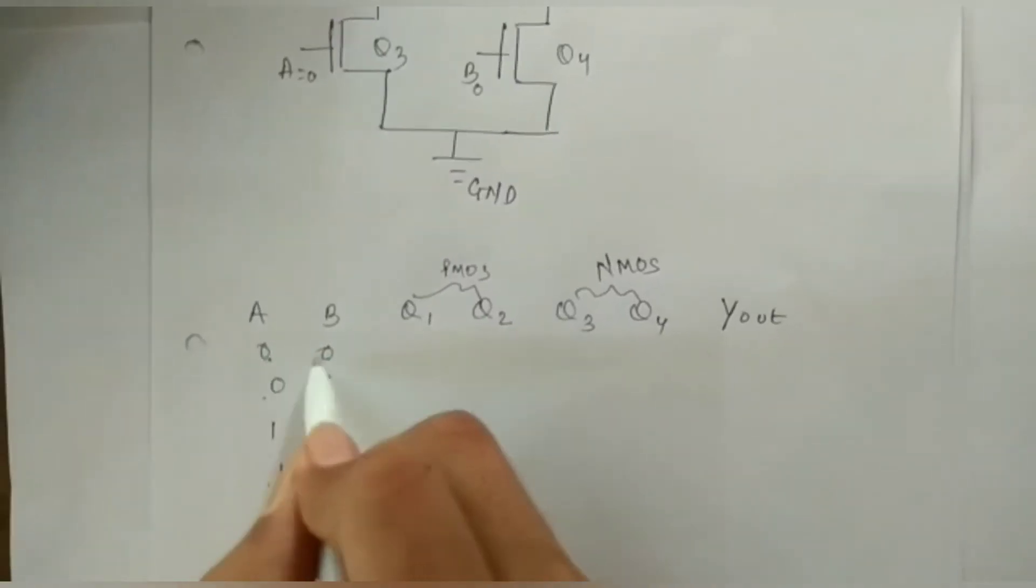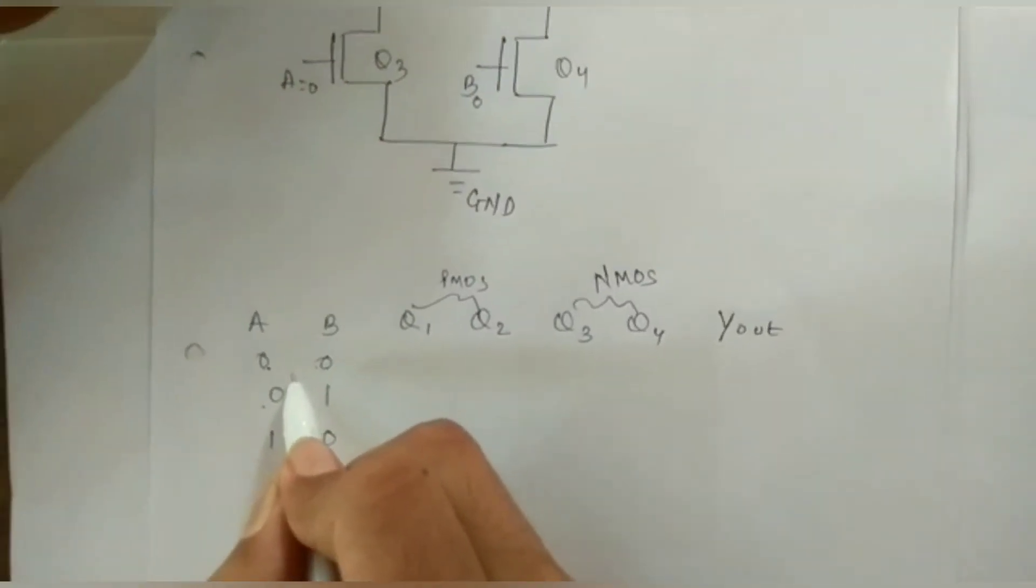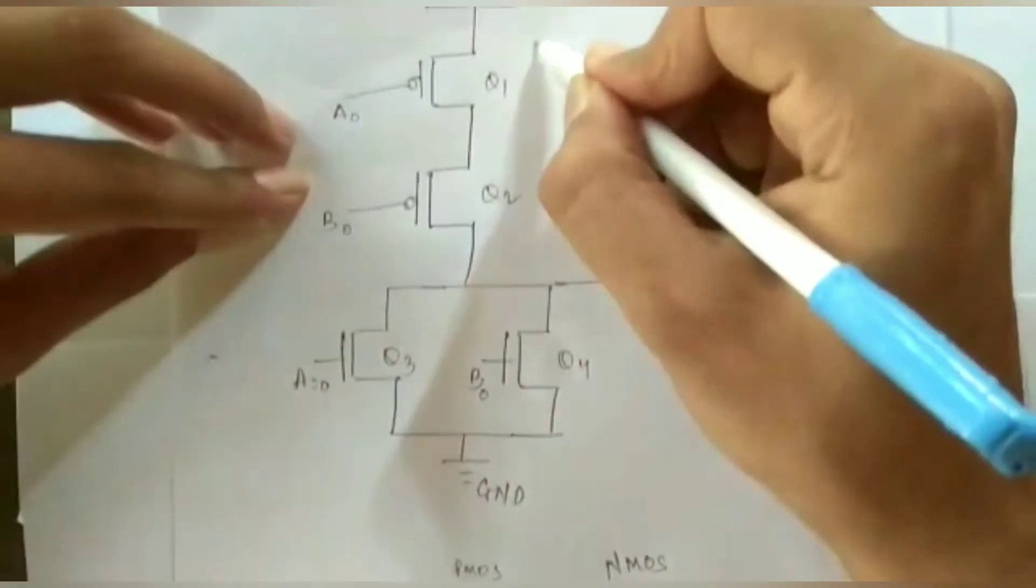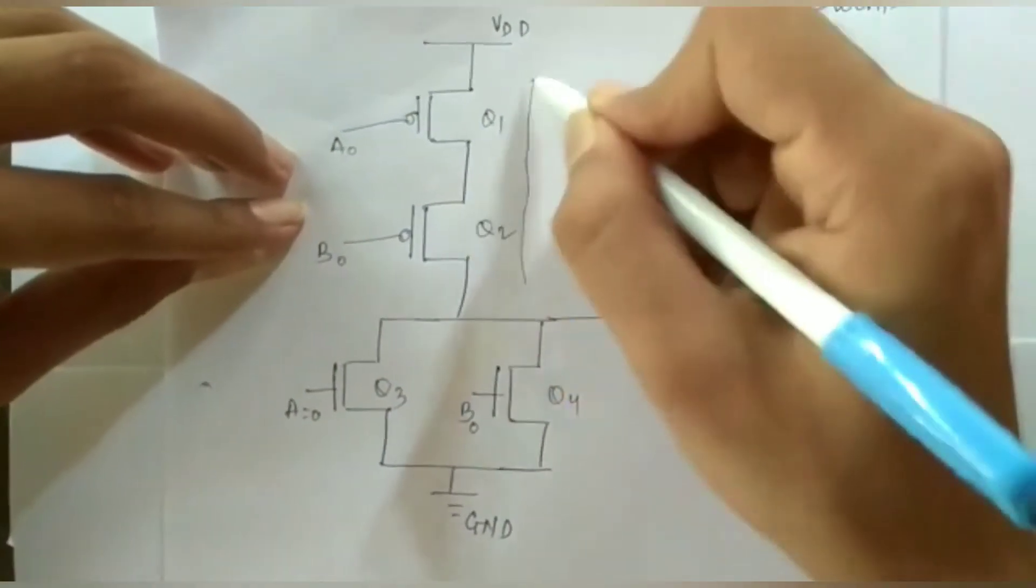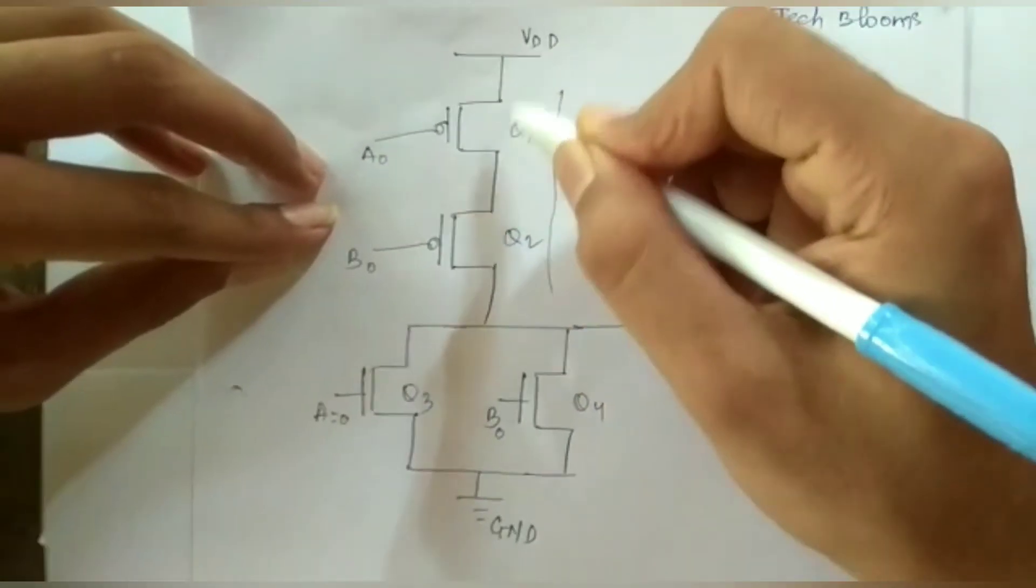When we give both 0, since we know PMOS is ON for 0, the connection will be ON here. These both are connected in series.